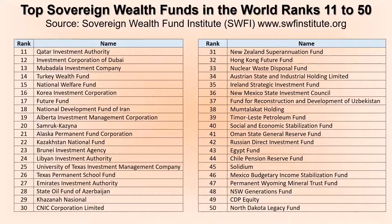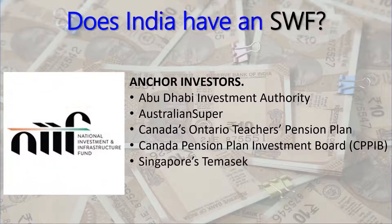Looking at the remaining SWFs within the top 50, we see sovereign wealth funds from different countries such as Egypt, Chile, Austria, and at number 14, Turkey's wealth fund.